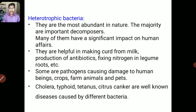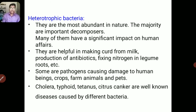Heterotrophic bacteria are abundant in nature. The majority are important decomposers. They are very useful for humans — they help in making curd from milk, in the production of antibiotics, and in fixing nitrogen in leguminous roots. Some of them act as pathogens and cause damage to crops and animals. Cholera, typhoid, tetanus, and citrus canker are well-known bacteria-caused diseases.